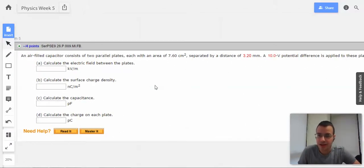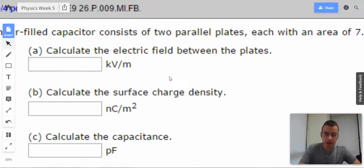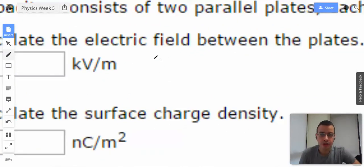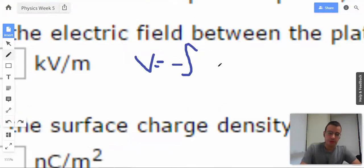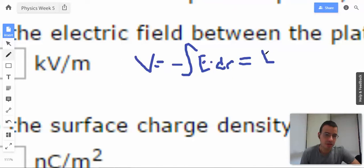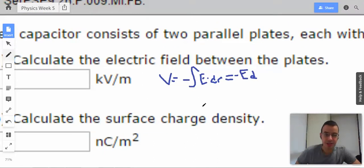Calculate the electric field between the plates. This goes back to the whole idea of voltage equals negative integral E dot dr. Since the electric field is constant, we can pull it out, and we get voltage equals negative E times distance.